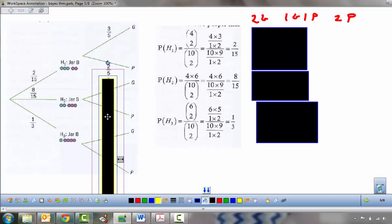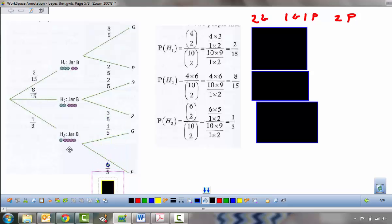Hypothesis 2 was transferring one of each. So now we have two green, three purple. Probability of the green is two fifths. Purple is three fifths. And hypothesis 3 was transferring two purple marbles. Here we're looking at a makeup of one green, four purple. So one fifth and four fifths. And now we have all the information that we need to find our total probability.